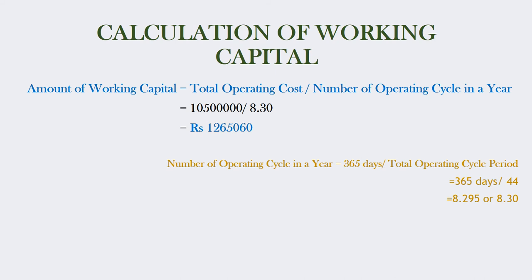Now that we have the operating cycle of 44 days, we can calculate the working capital needed. The formula is: amount of working capital equals total operating cost divided by number of operating cycles in a year. Number of operating cycles in a year equals 365 days divided by 44 days, which gives 8.30. Therefore, working capital equals Rs. 1,55,00,000 divided by 8.30, which gives Rs. 12,65,060. This is the total amount of working capital needed.